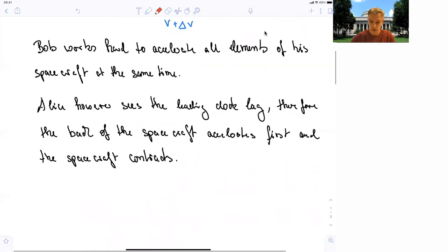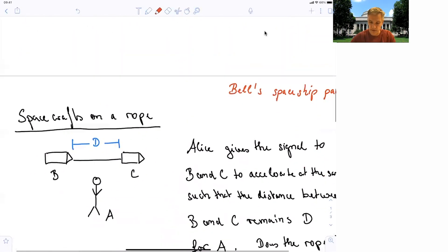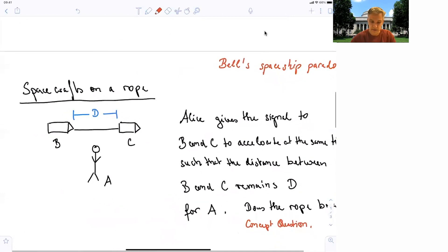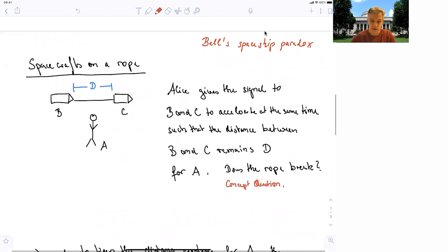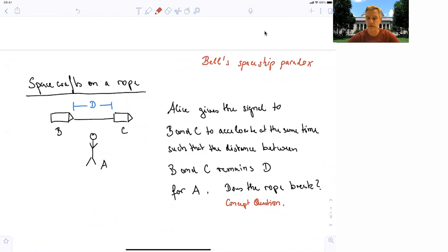OK, so the next question now, the next topic here in this video is the spacecraft on a rope paradox. This was phrased by Bell in the 1950s and 60s. He was working at CERN at the time and roaming the corridors discussing with his colleagues. The situation here is related to the one we just discussed, but slightly different.